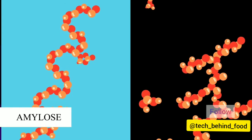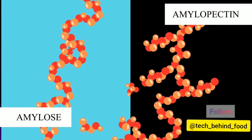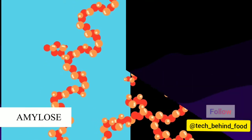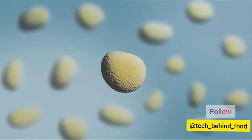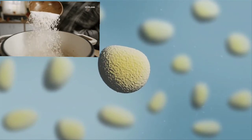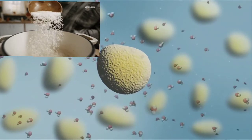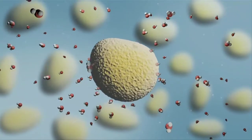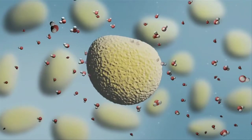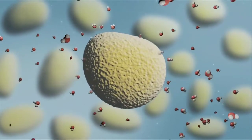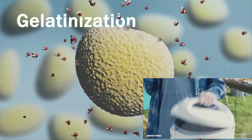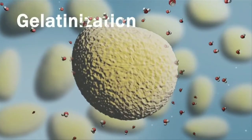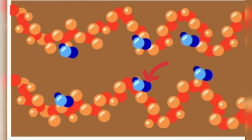This polysaccharide, when heated in the presence of water to about 80 degrees, absorbs water and swells up. This process is referred to as gelatinization. The hydrogen bonds connecting the starch chains break and water molecules form new bonds with the starch chain.